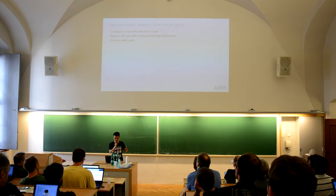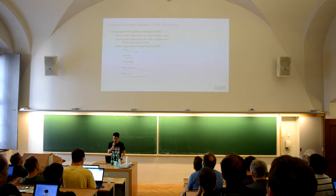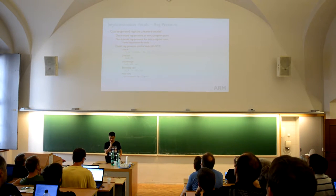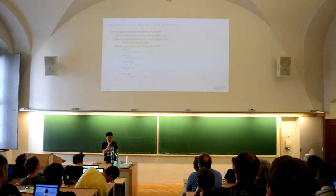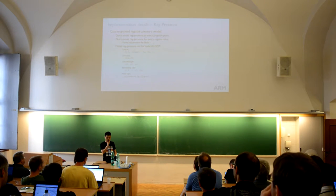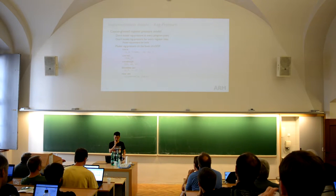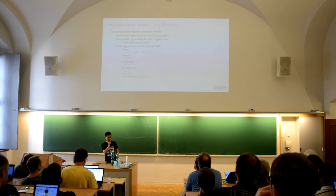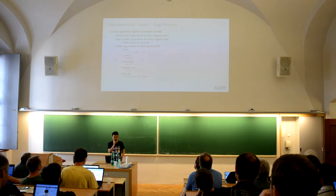We will see there are other problems in this step. Here comes the register pressure. To model register pressure, we don't do the cross-function register pressure model because it's too early in the compilation stage and also because of SSA coordination problems — it's kind of impossible. So we don't model it at all in the prior research class style. We only classify the variables into integer and floating point, that's all we need.